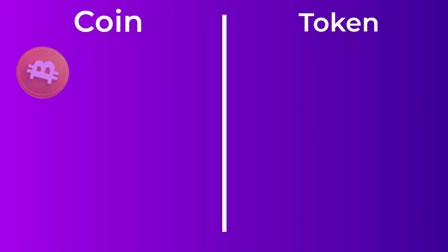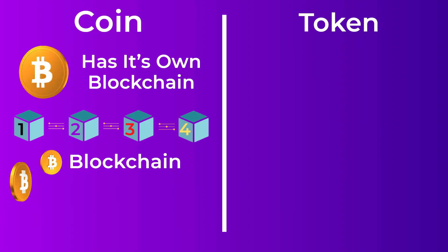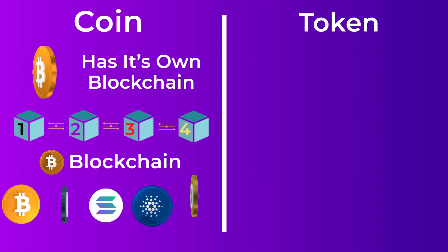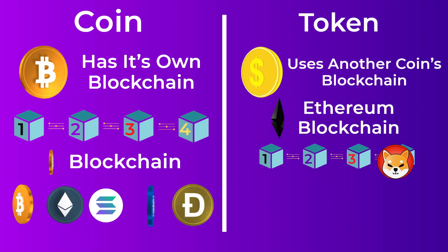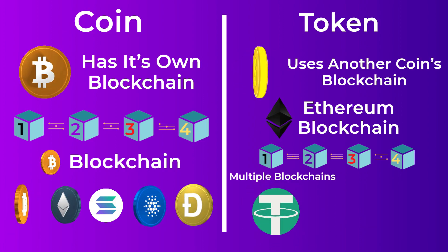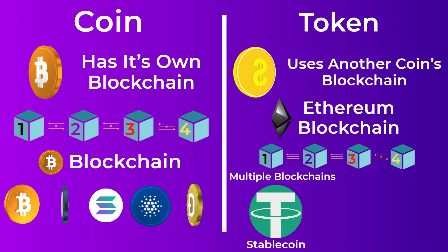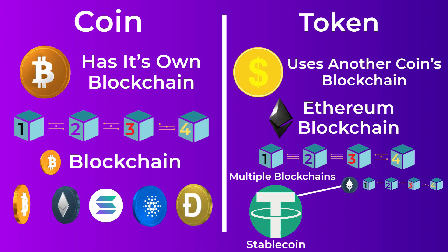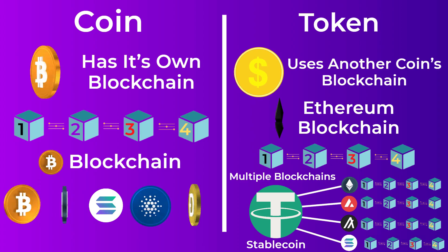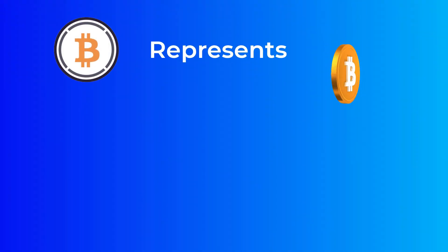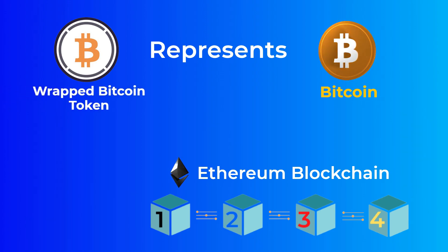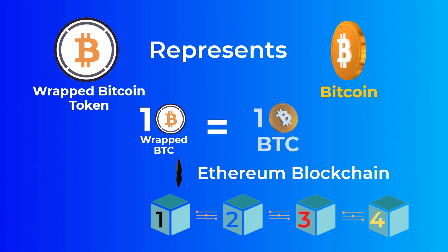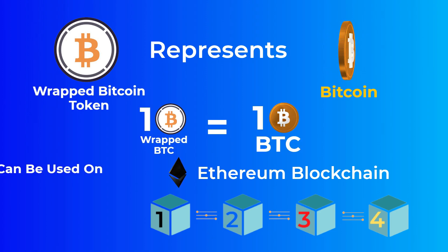To be able to understand crypto bridges, you first need to know the difference between a coin and a token. A coin is a cryptocurrency that has its own blockchain, like Bitcoin, Ethereum, Solana, Cardano, and Dogecoin. A token, on the other hand, is a cryptocurrency that uses another coin's blockchain to run, like the Shiba Inu token which runs on the Ethereum blockchain. Some tokens are available on multiple blockchains — like Tether, for example. Tether is called a stablecoin but technically it is a token available on multiple blockchains. You should also know that you can have a token that represents another coin — for example, a token that represents Bitcoin on the Ethereum blockchain. This type of token is called a wrapped token.